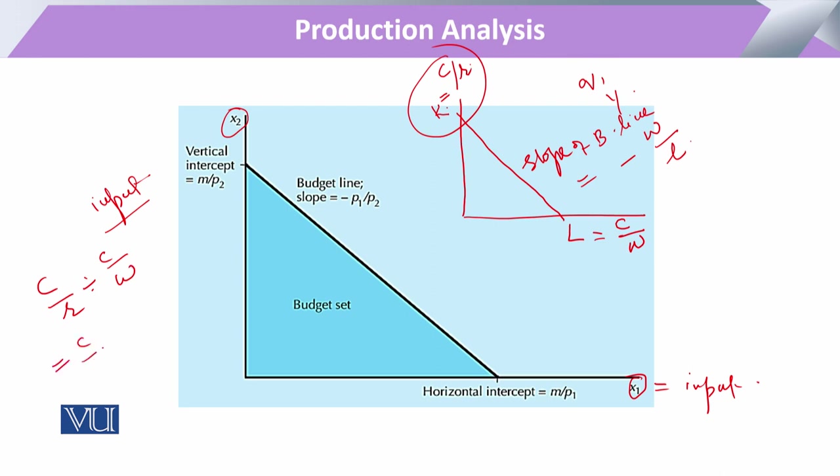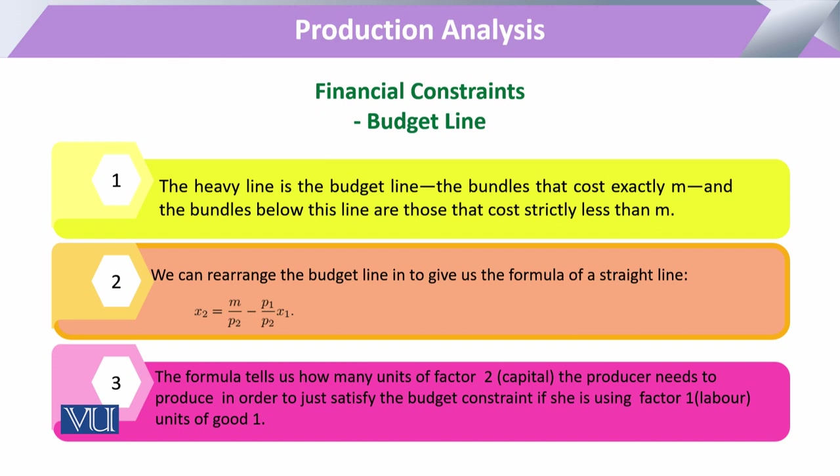The slope of this budget line is now coming to this point. If we have to calculate what will be the amount of one input that the producer has to purchase, the producer who is going to produce with the utilization of x1 and x2, then by rearranging the previous equation, it will give us this value.